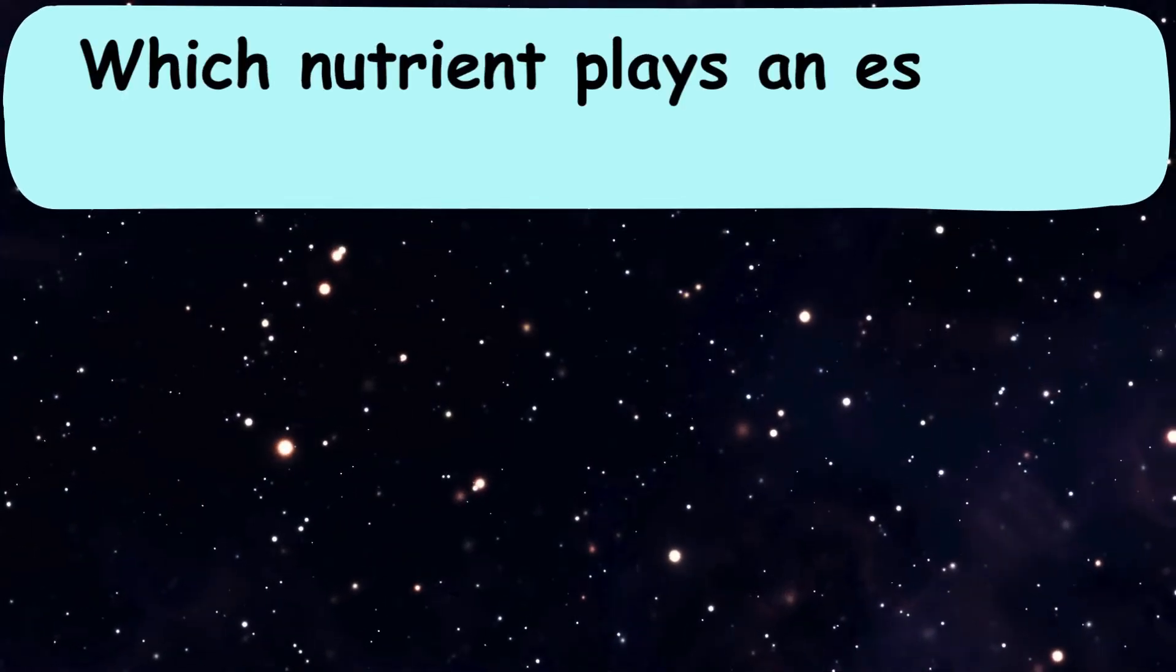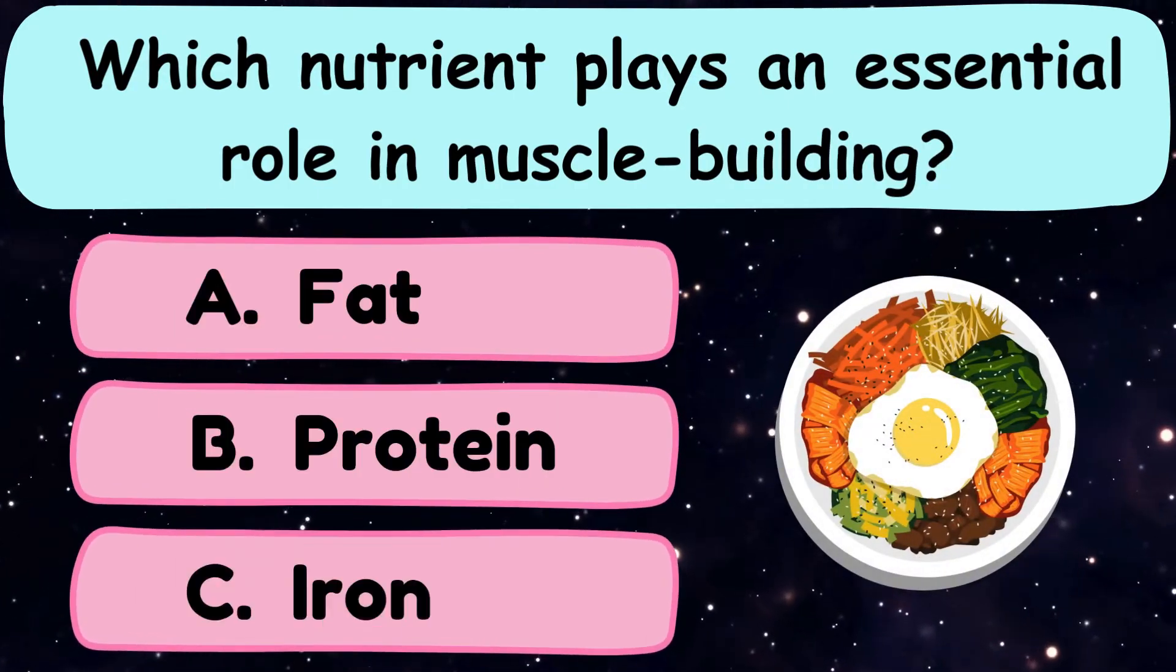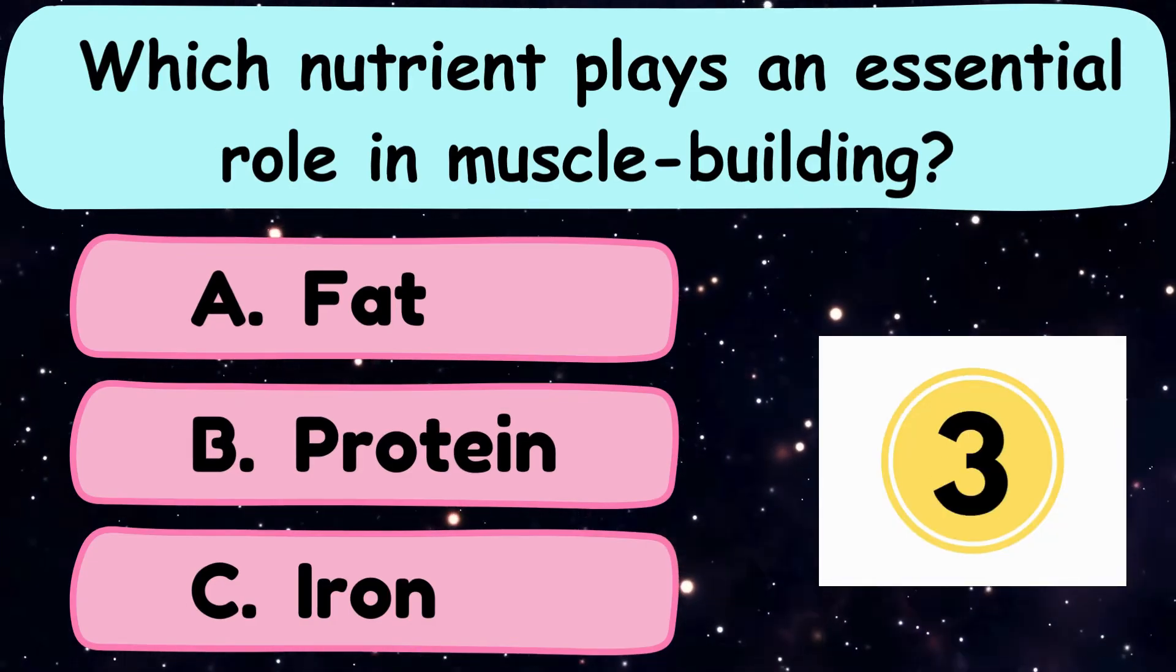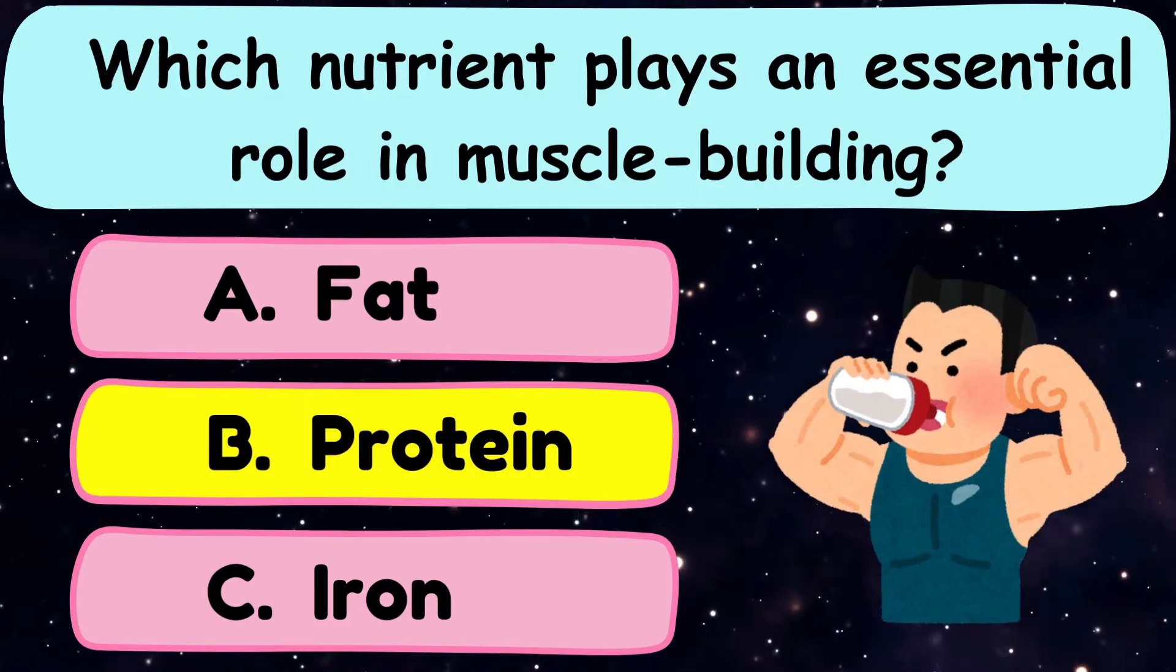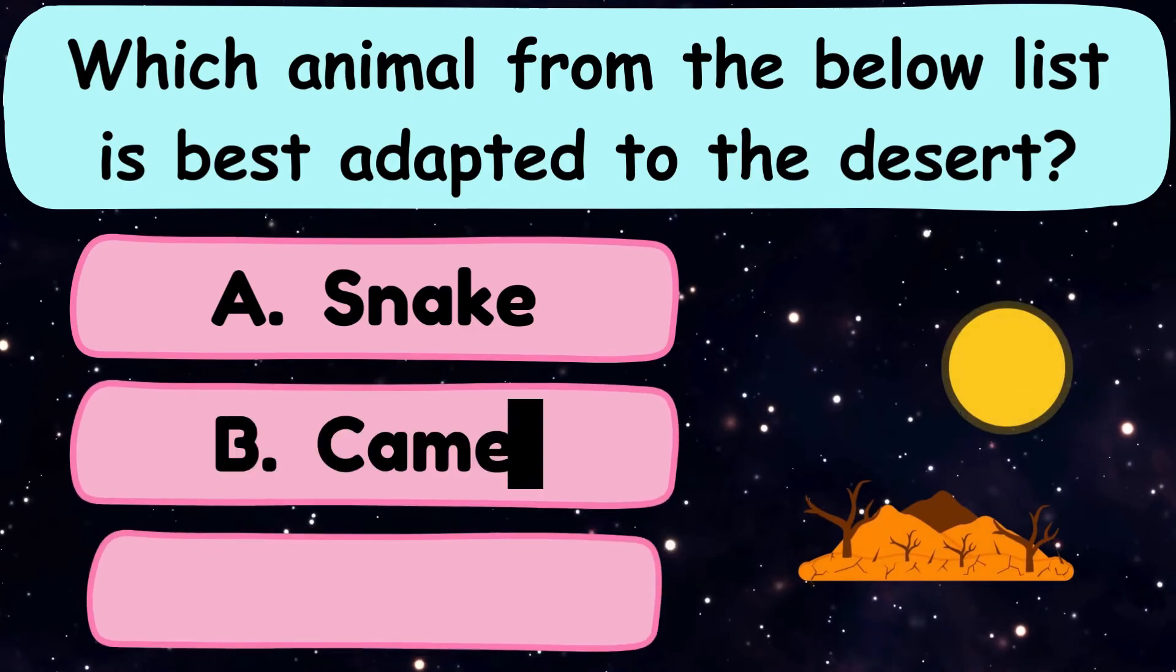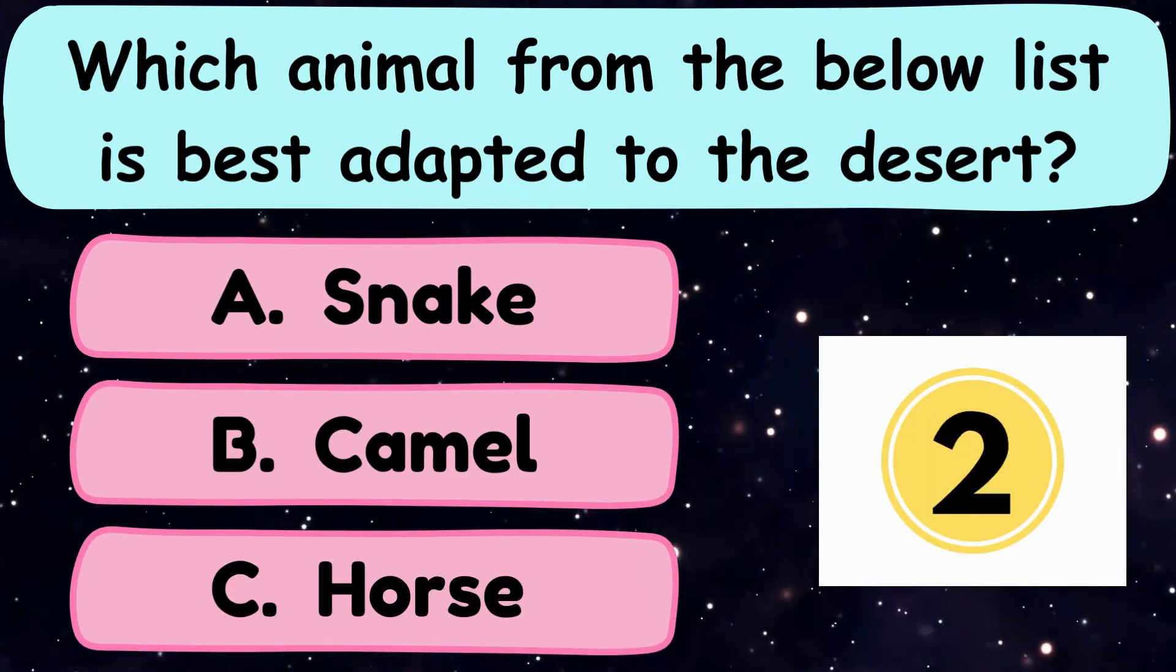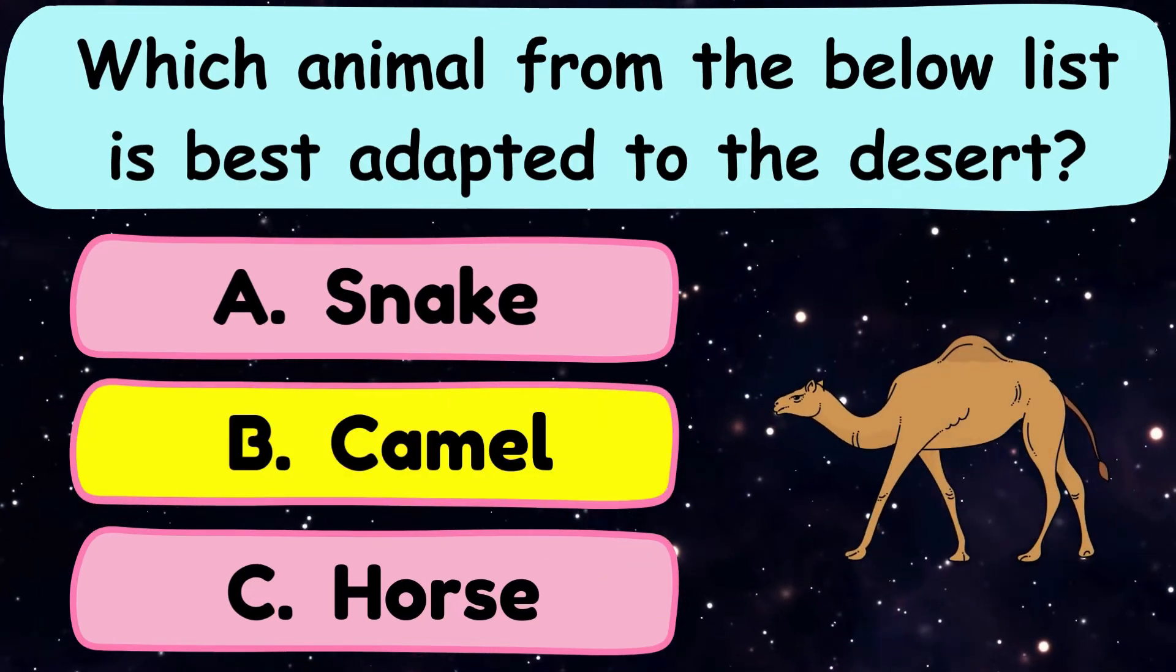Question number 20. Which nutrient plays an essential role in muscle building? A. Fat, B. Protein, or C. Iron? Question number 21. Which animal from the below list is best adapted to the desert? A. Snake, B. Camel, or C. Horse? And the correct answer is option B. Camel.